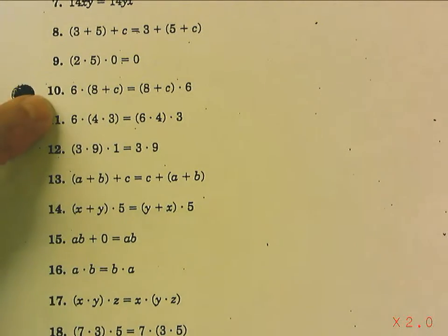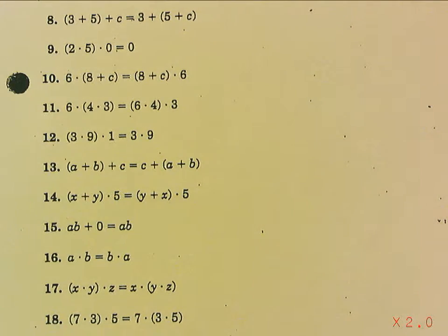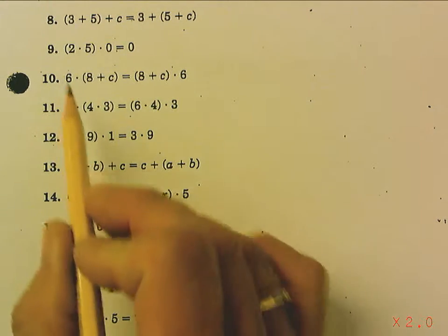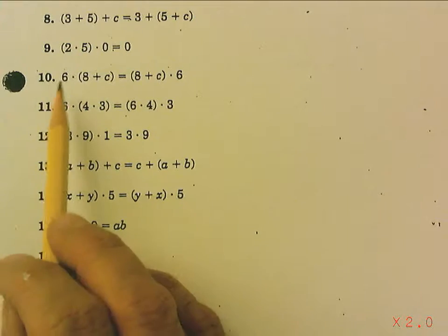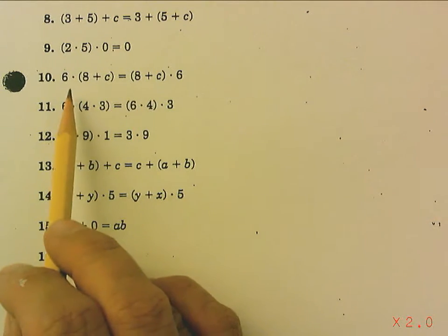Now, number 10 is tricky. Because many of you will look at number 10 and automatically assume, oh, parentheses must be associative. But, if it was associative, the numbers, or variables, would not move.